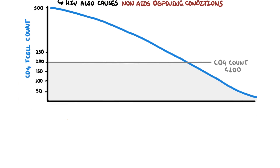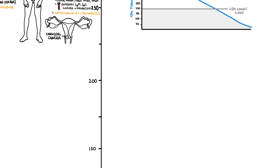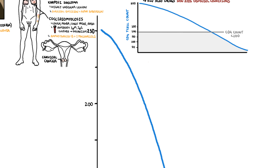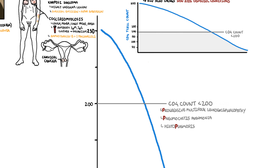Zooming into the graph with the CD4 cell count up to 250, in people with untreated HIV the CD4 cell count continues to go down to even below 50. With a CD4 cell count less than 200, infections including progressive multifocal leukoencephalopathy, pneumocystis pneumonia, and histoplasmosis can emerge. I like to remember these as the three Ps.